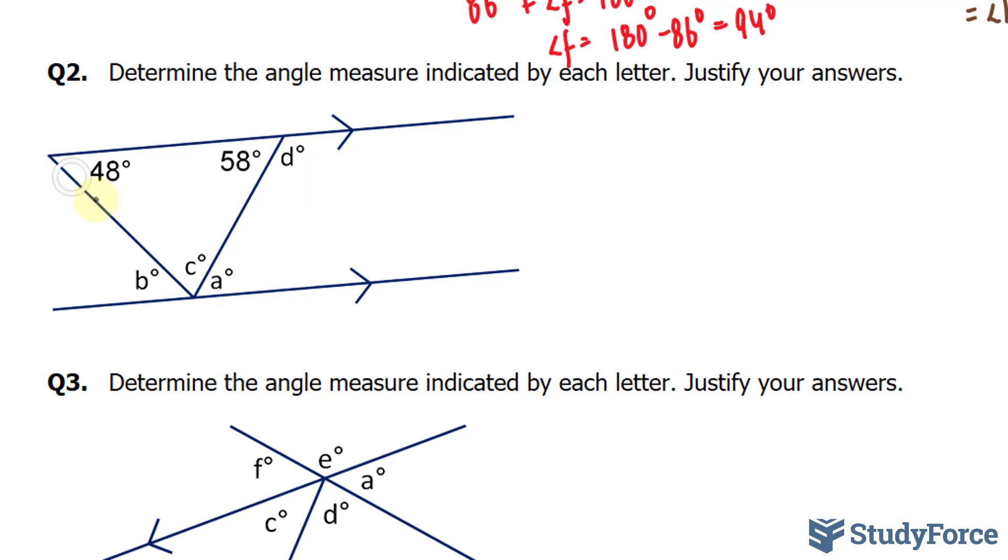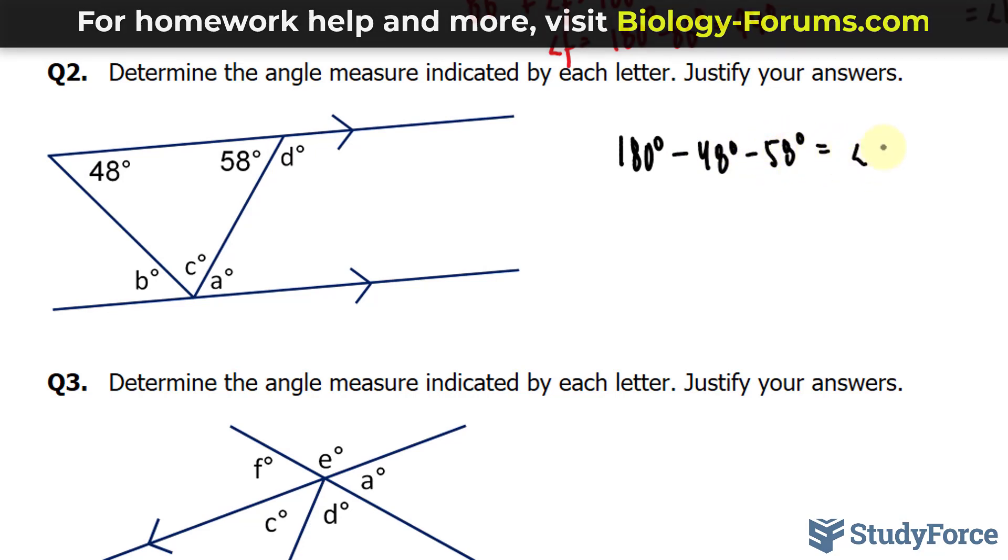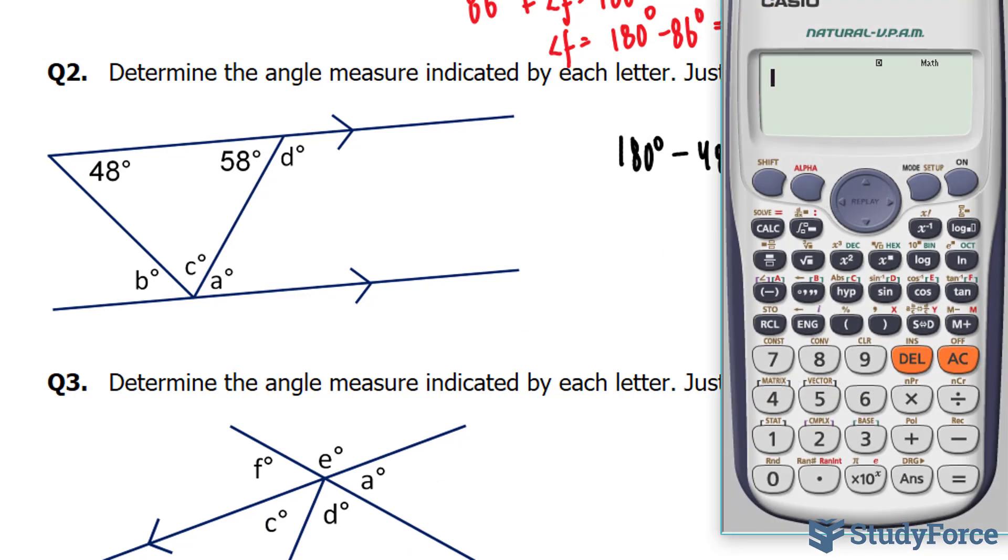As you can see, we have a completed triangle here, and a triangle consists of 180 degrees. So we can find angle C by taking 180 degrees, subtracting it from 48 and 58. If you use your calculator, you end up with 180 minus 58 minus 48, and we end up with 74.